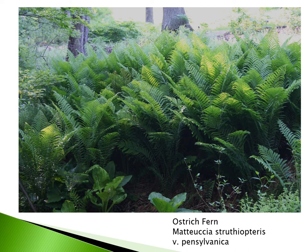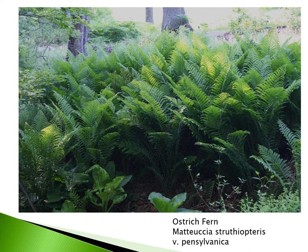Ostrich fern, Matteuccia struthiopteris variety pensylvanica, is the fiddlehead species. It's very interesting in its growth habit because the blade has the widest leaves close to the tip of the frond, giving it a feather-like appearance. It forms upright rhizomes creating vase-shaped plants that spread throughout the understory. Ostrich fern is often found in floodplains along rivers, yet in your garden it will tolerate average soil — I have it growing from seasonally moist areas all the way to the top of a slope in the shade. It does prefer full shade and at least some moisture.